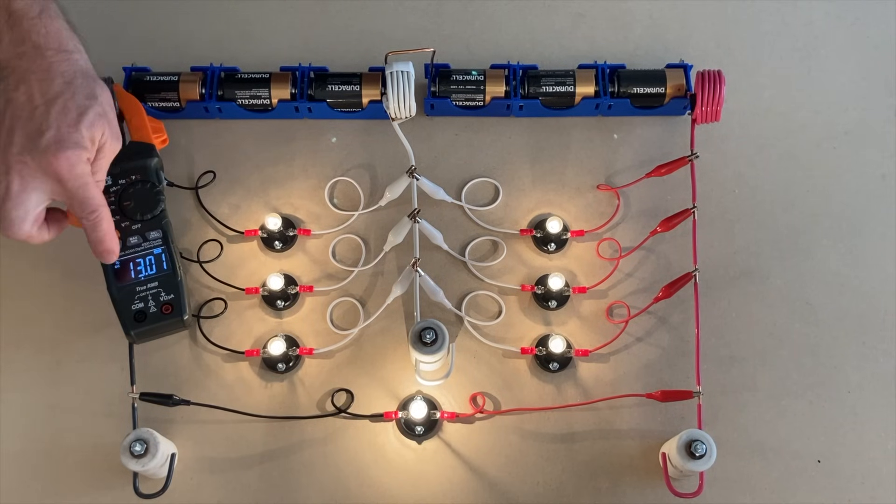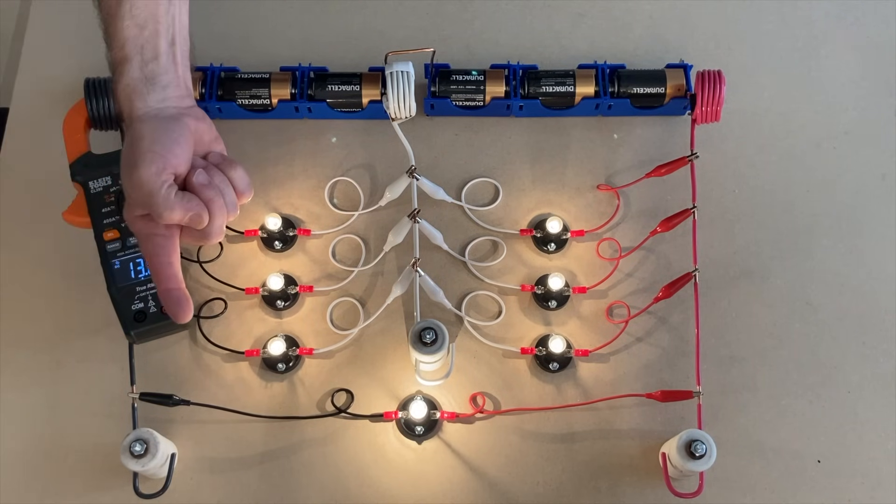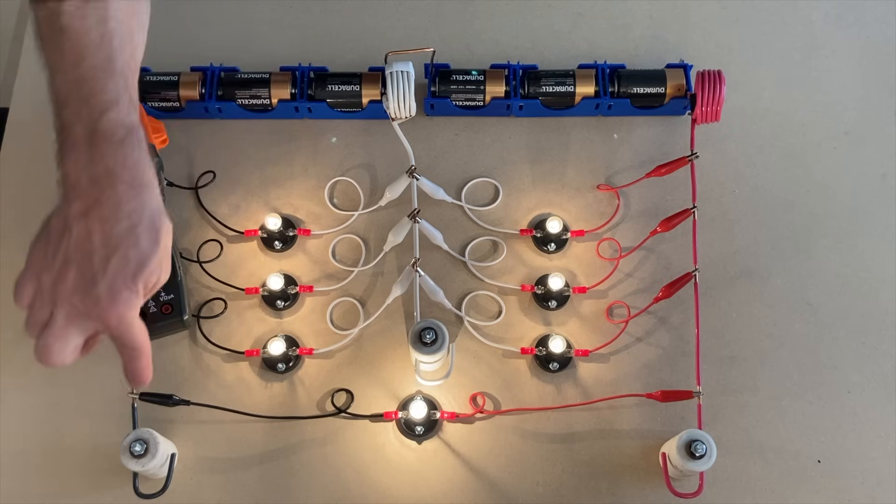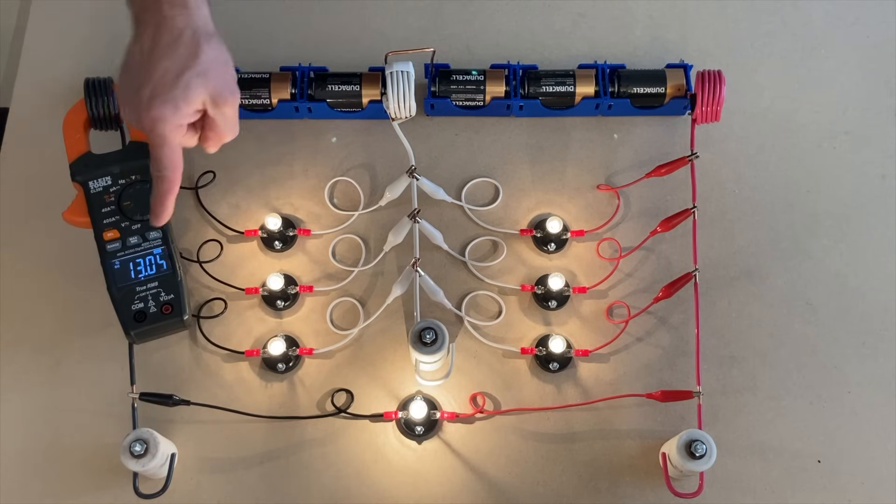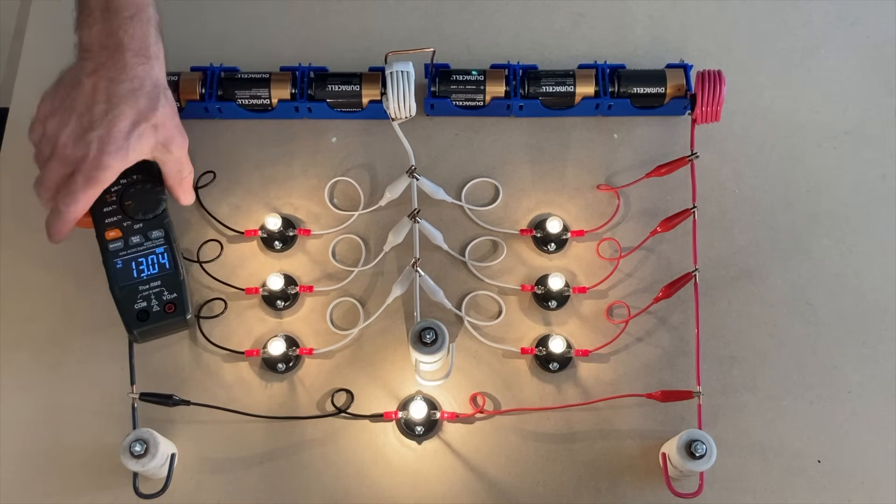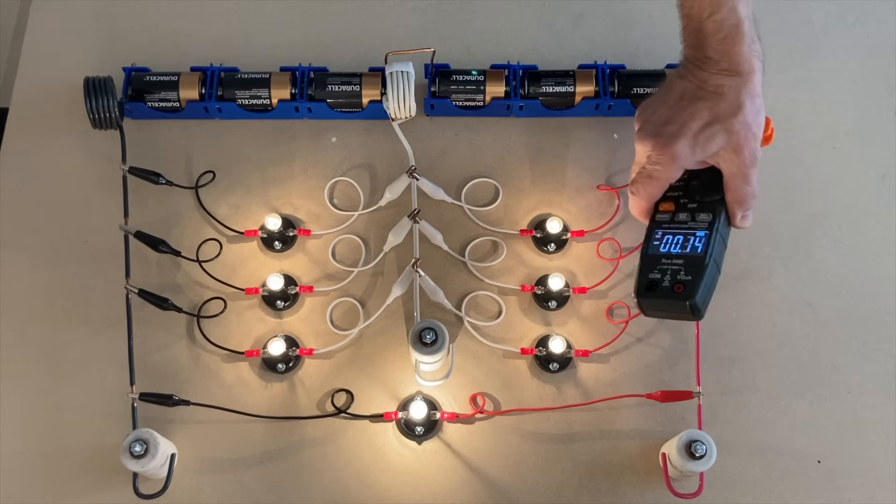OK, here I've got about 13 amps and it's positive. So that's flowing out to the field, a little higher amperage because now my line to line load is working, drawing extra amps. So 13 amps going out to the field.